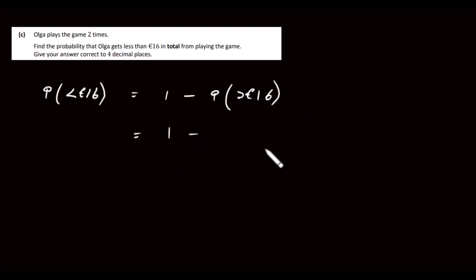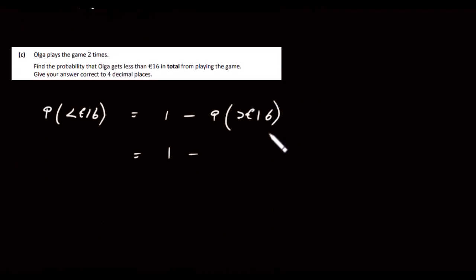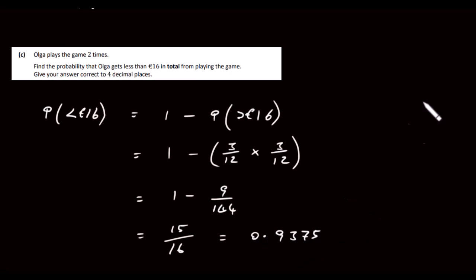So the probability that she gets more than 16 euros can only be done in one way, really, to get a 9 and a 9. The next number less than 9 is a 6, and that'll give us 15. So we want a 9 and a 9. So it's the probability of getting two 9s, really. So the probability of getting a 9 is 3 over 12, and means you multiply another 3 over 12 the second time. So when you do this, you get 1 minus 9 over 144, which is 15 over 16. And when you do that, then to four decimal places, 0.9375. And that's it for this question.